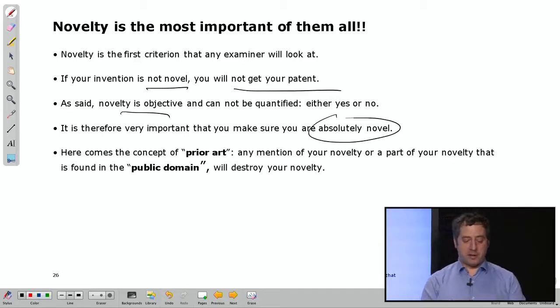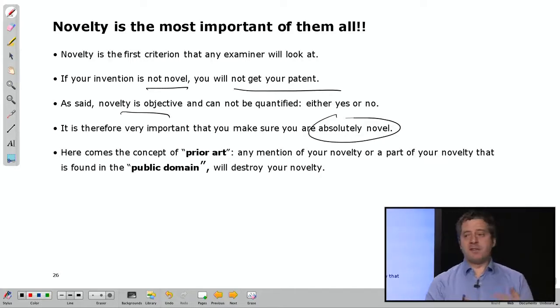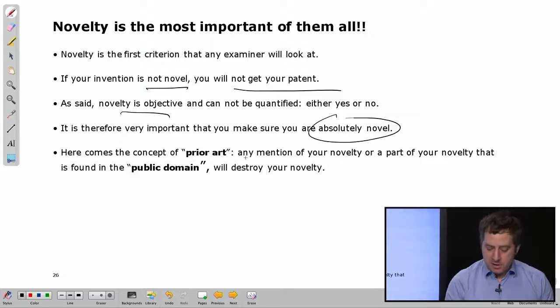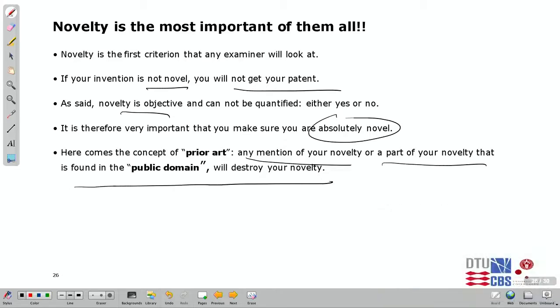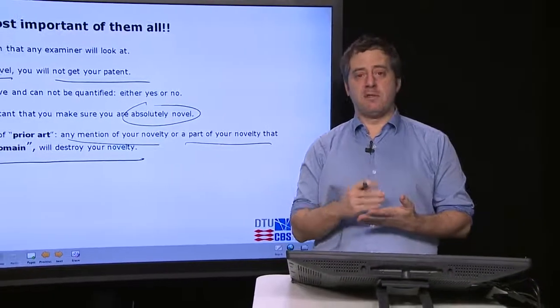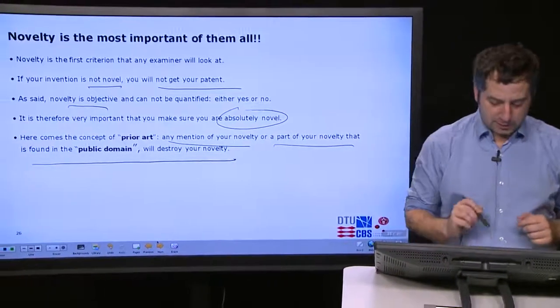Here is where I introduce the concept of prior art. Prior art would be any kind of information or any kind of things that might contain a description of your invention. Any mention of your novelty or a part of your novelty that is found in the public domain will destroy your novelty. Basically what I'm trying to say is that if anything comes up in public domain, which is everything in the public—could be Google, could be Yahoo, could be newspaper, could be anything which is available to everybody. Any mention of your invention in the public domain means you're not novel anymore.